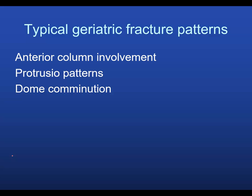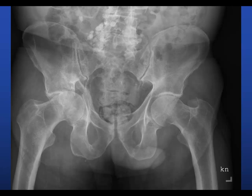Firstly, you get a preponderance of anterior column involvement. You also see these protrusio patterns where the femoral head kind of blows through the quadrilateral plate and dislocates medially. You can get dome comminution, which is not seen often in younger patients — and unfortunately, that's the one place you don't want comminution. You also get marginal impaction up in the dome, which is very devastating and makes treatment very challenging if you're going to do ORIF.